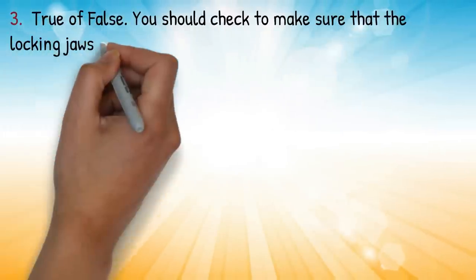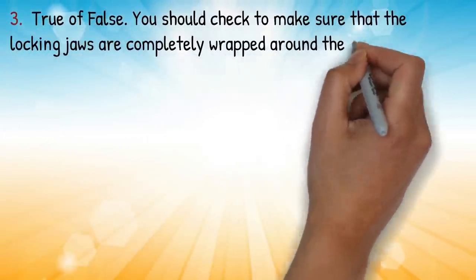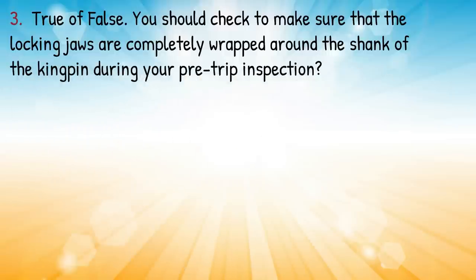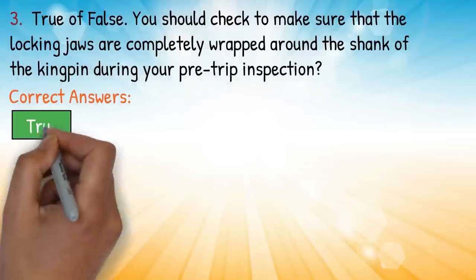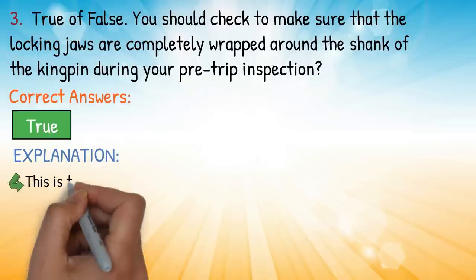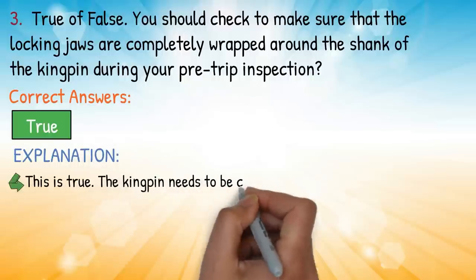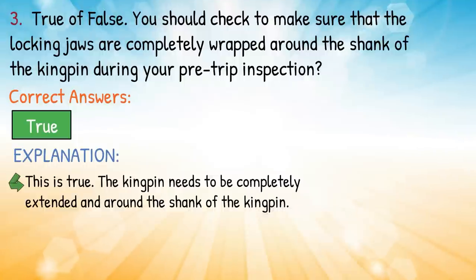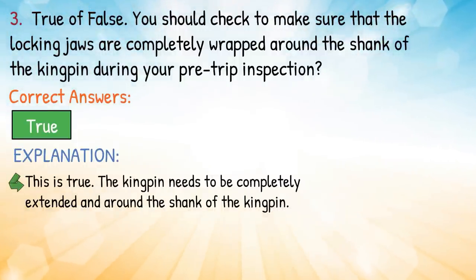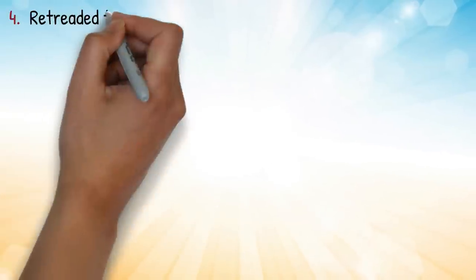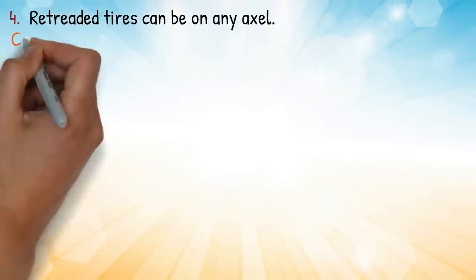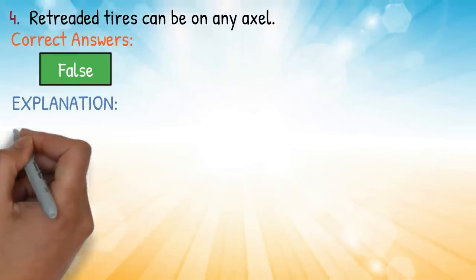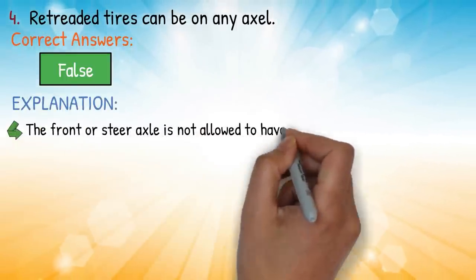Question three: true or false — you should check to make sure that the locking jaws are completely wrapped around the shank of the kingpin during your pre-trip inspection. Correct answer: true. Explanation: this is true — the kingpin needs to be completely extended and the locking jaws around the shank of the kingpin.